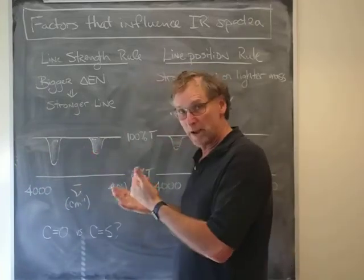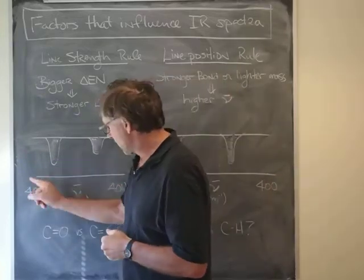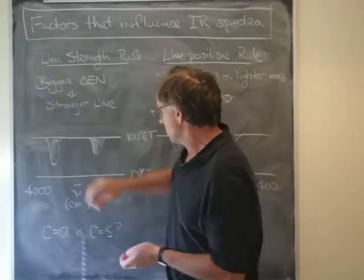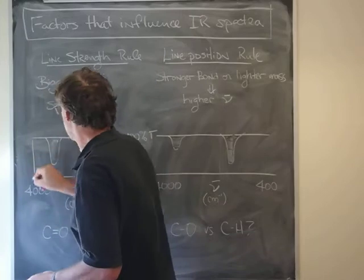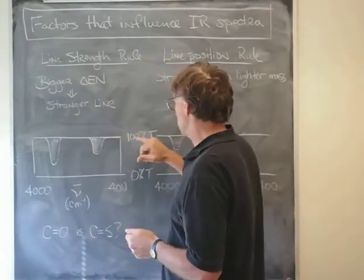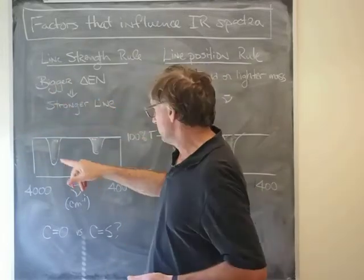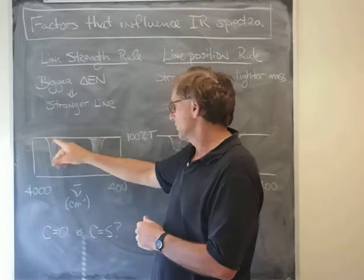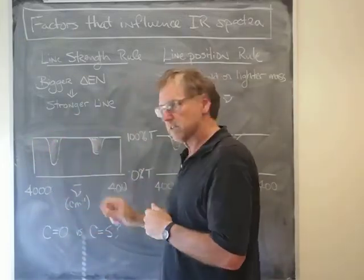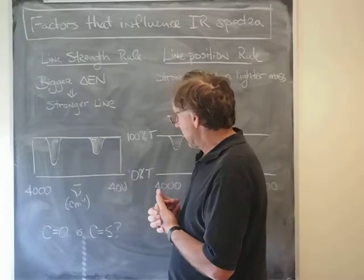The way this is conventionally laid out is that we go from high frequency to low frequency. On the vertical axis, it's percent transmission. In other words, if I have a molecule that's not absorbing any light, that means it would be 100% transmission. These two peaks mean that at this wave number and at this wave number, the molecule is absorbing.